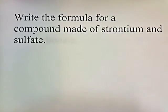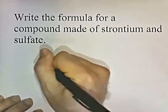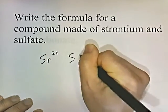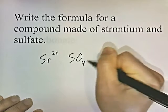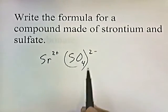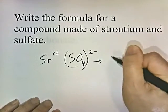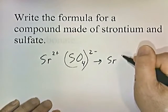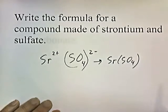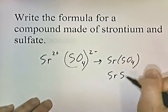For a compound made of strontium and sulfate: strontium is in group two, so it's plus two. Sulfate is SO4 with a negative two charge. Since these have equal and opposite charges, you just stick them together: SrSO4.